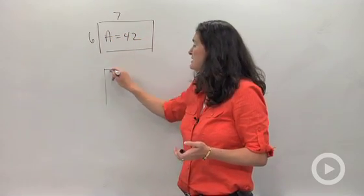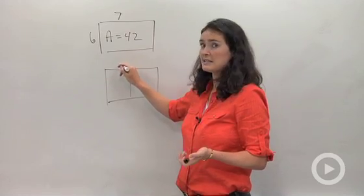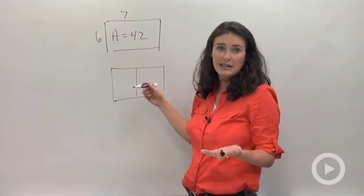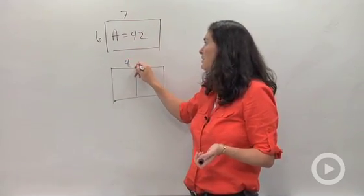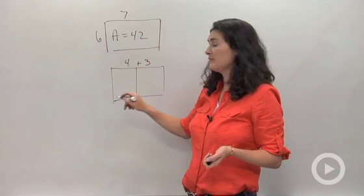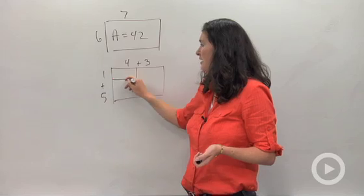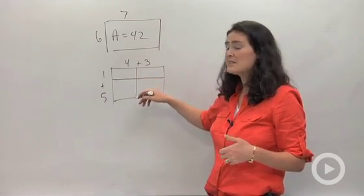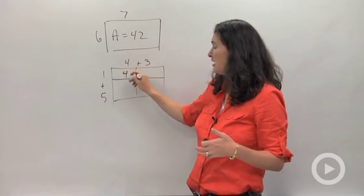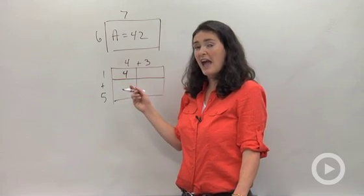You would get that same answer if I broke that rectangle into pieces. Instead of 7, I'm going to break it into 4 and 3. 4 plus 3 is 7. And on the side here, I'm going to make it 1 plus 5. Now I have 4 different rectangles. And when I find the area of each little chunk, you'll see they add up to 42.